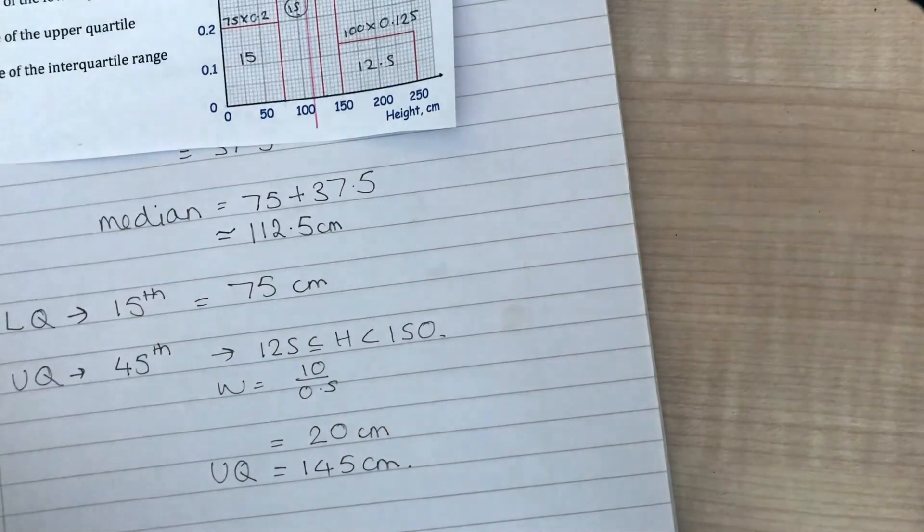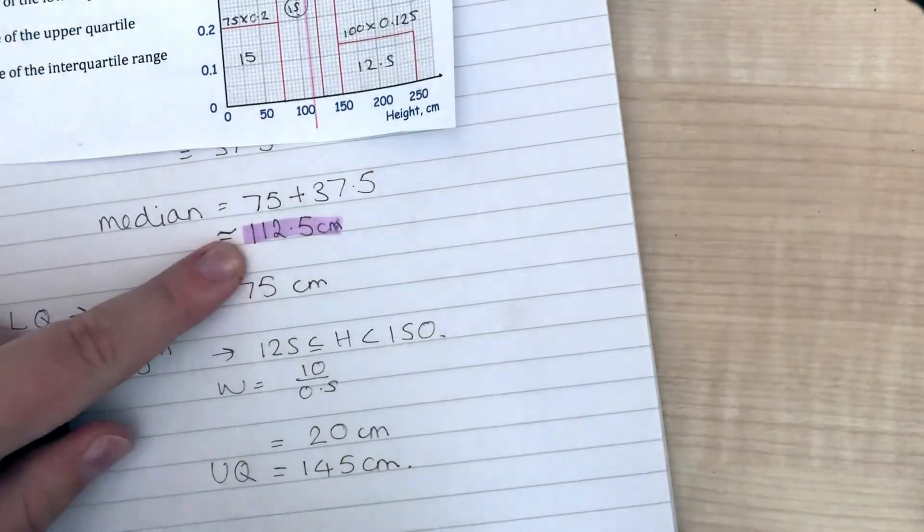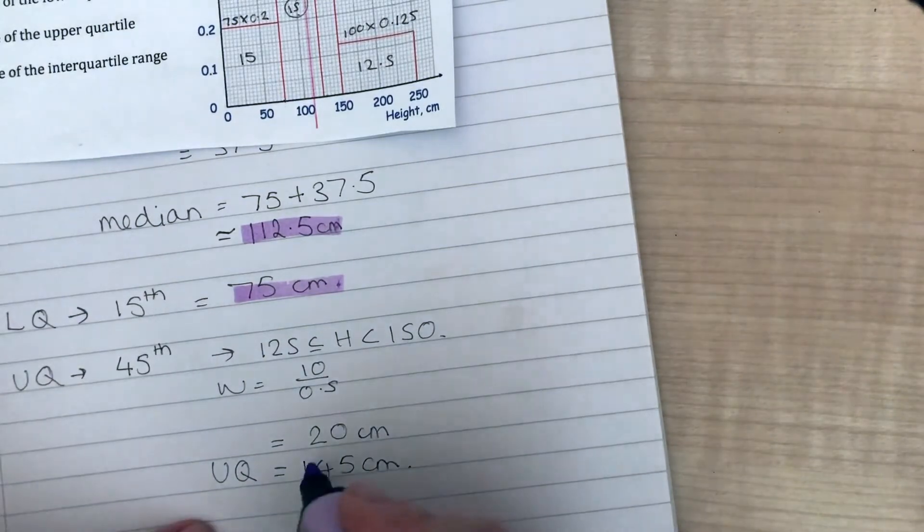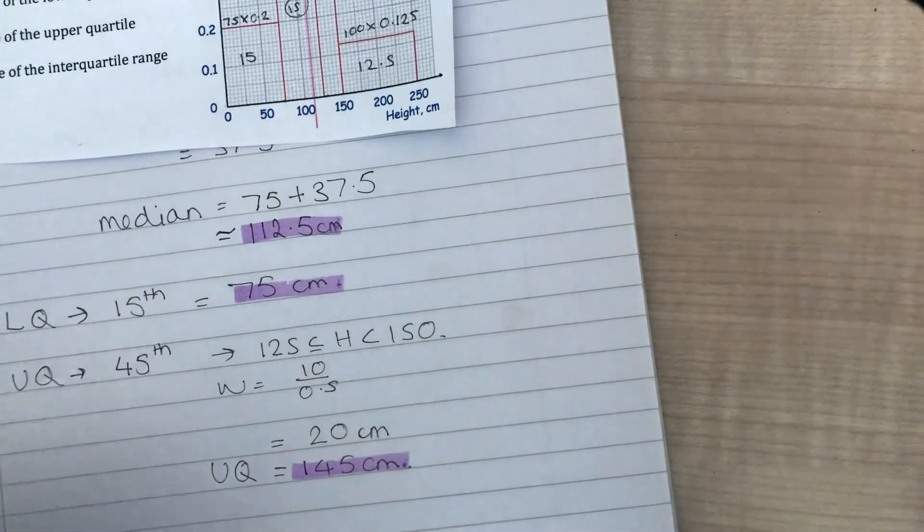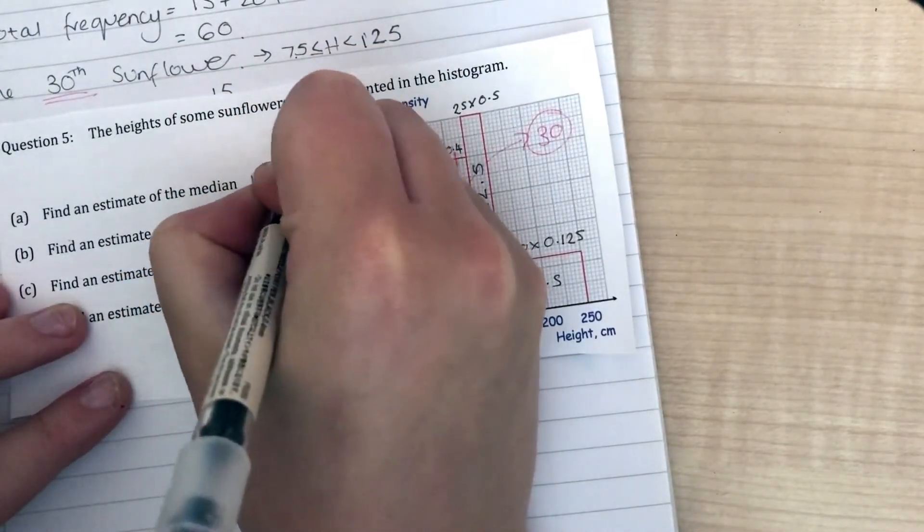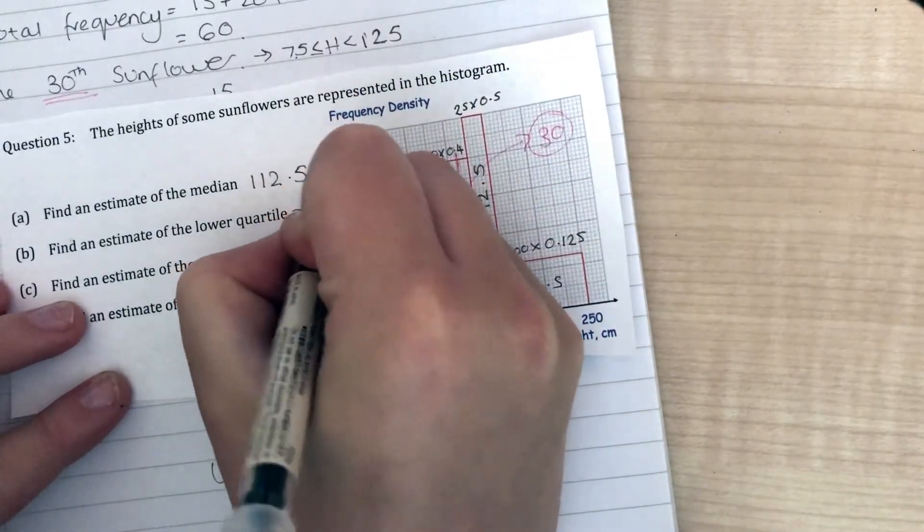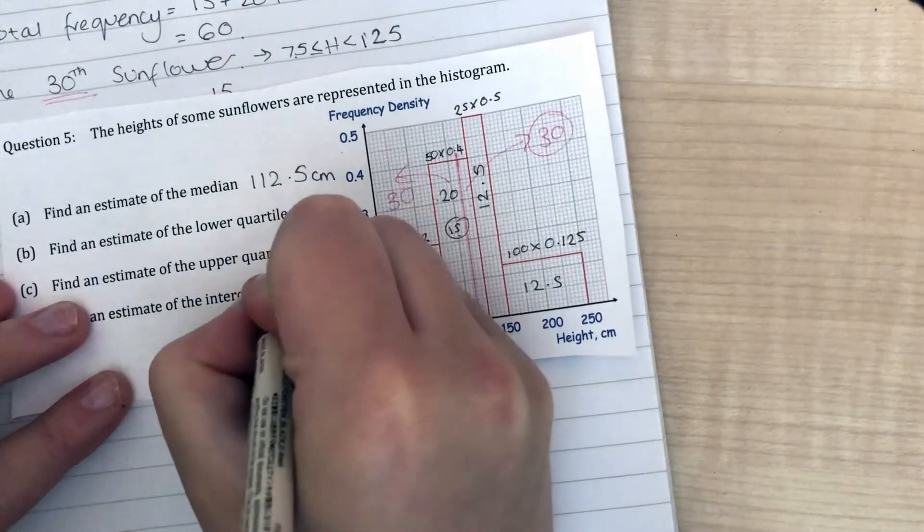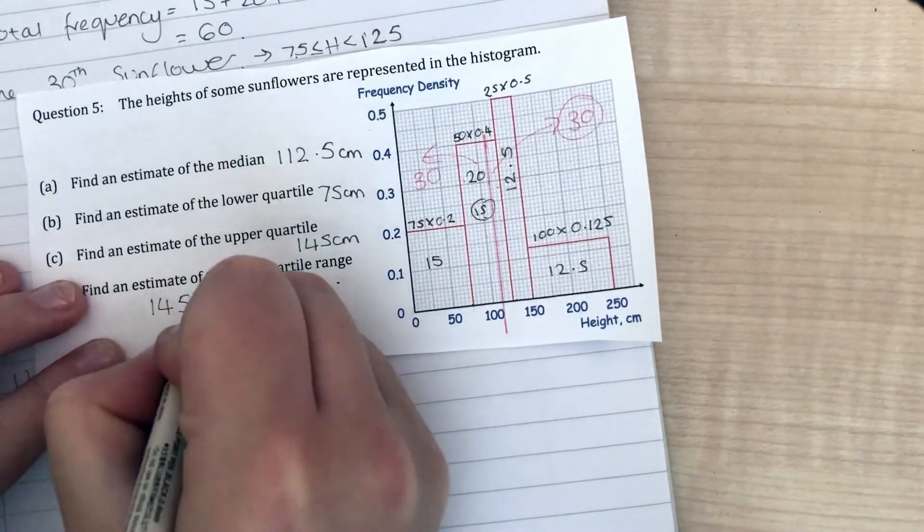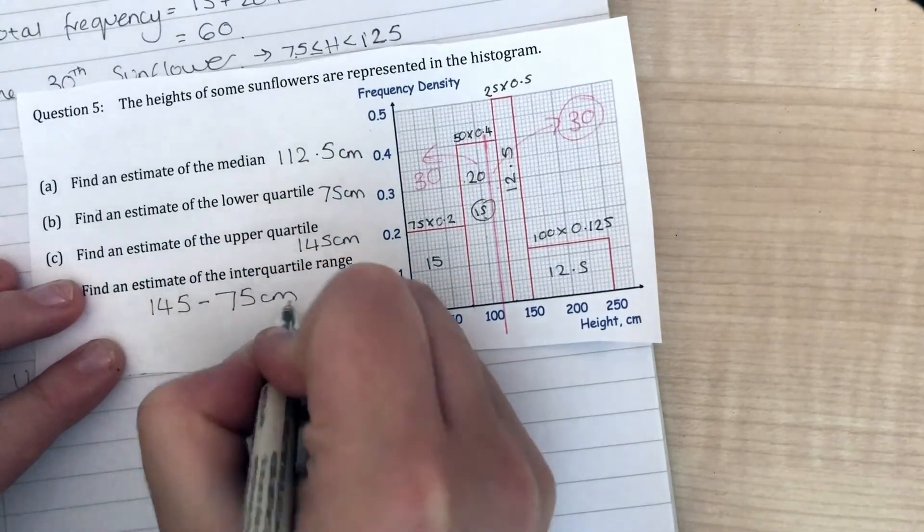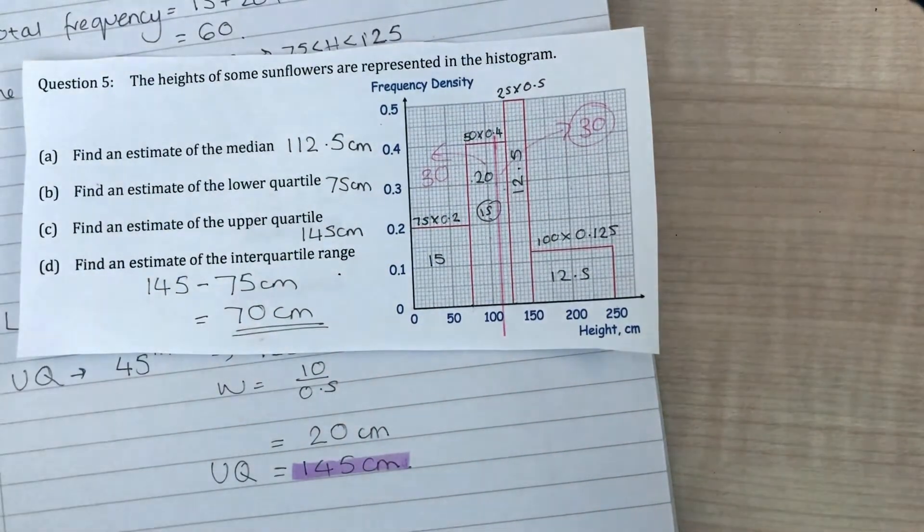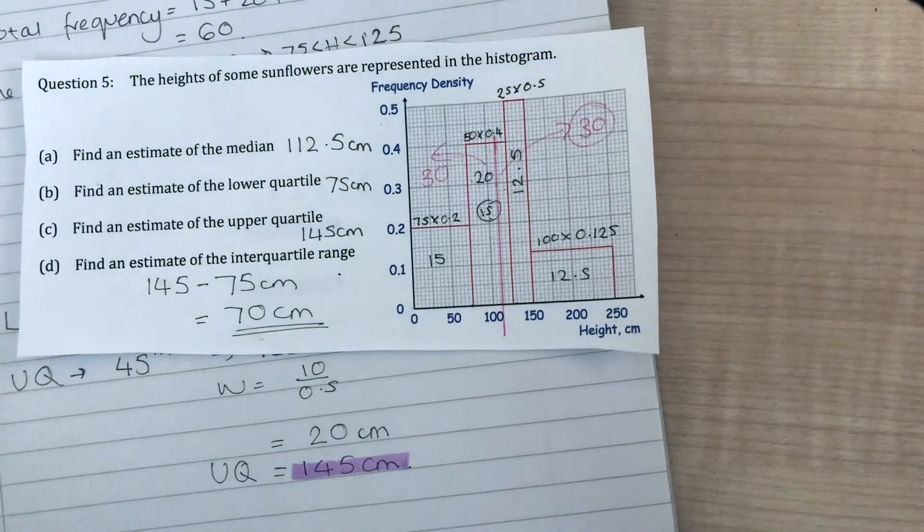Our estimate for our median is 112.5, our lower quartile is 75, and our upper quartile we've just worked out is 145. So median: 112.5 centimeters, lower quartile: 75 centimeters, upper quartile: 145 centimeters. Now interquartile range is the biggest one take away the smallest one for the quartiles, which gives me 70 centimeters. The interquartile range for these sunflowers is 70, and that is everything.